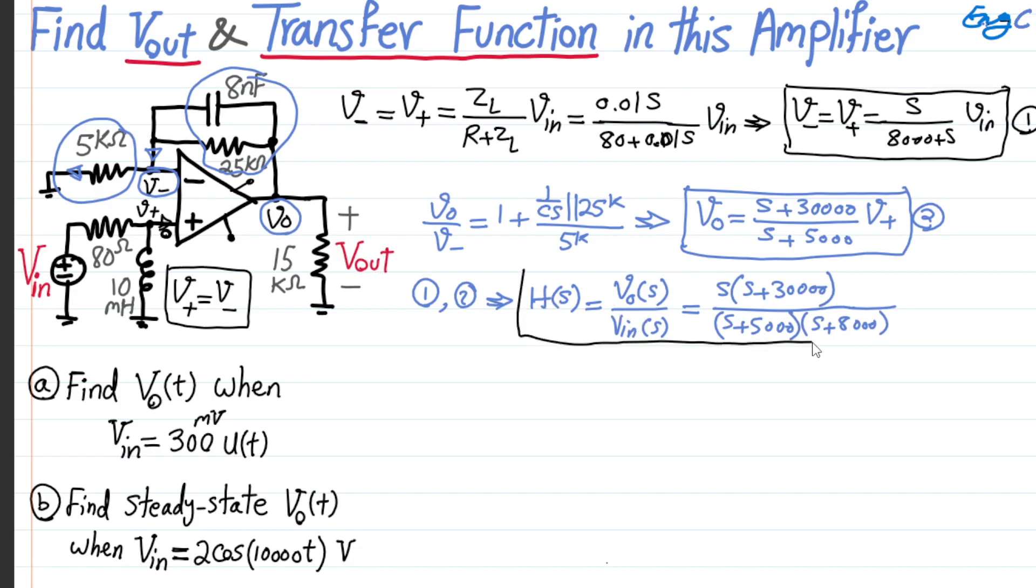Now we can jump into answering the question for part A and part B. In part A, as you can see, the input is 300 mV u(t), and as a result of that, it's super easy to just say, okay, that's in time domain, so equivalent Vin S domain is just simply 0.3, which means 300 mV, and u(t) Laplace transform of that is 1 over S. So that is the equivalent of Vin S domain.